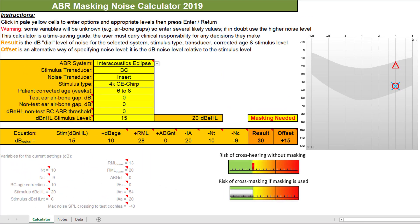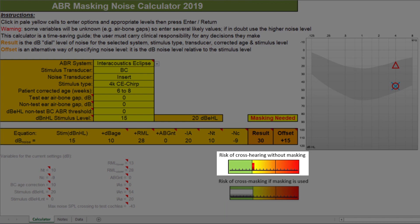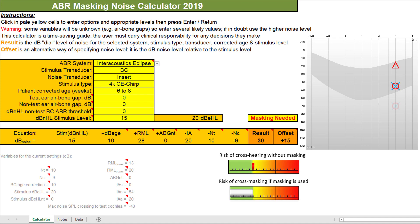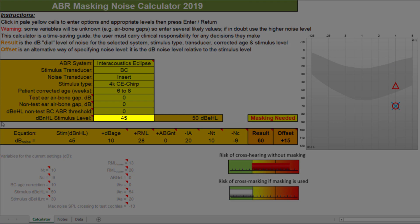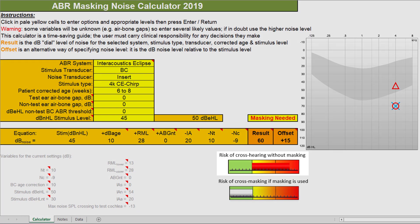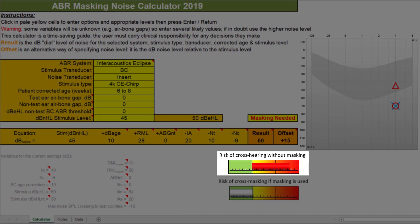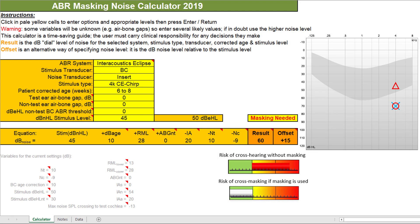In the example we have been looking at so far, you can see that the risk of cross-hearing without masking is low, although masking is still required. However, if we take another example where the stimulus level is higher, the risk increases substantially. This also opens up the range of potential options for the non-test ear BC threshold. You can enter some different estimated values into the calculator and then judge the effect of these.